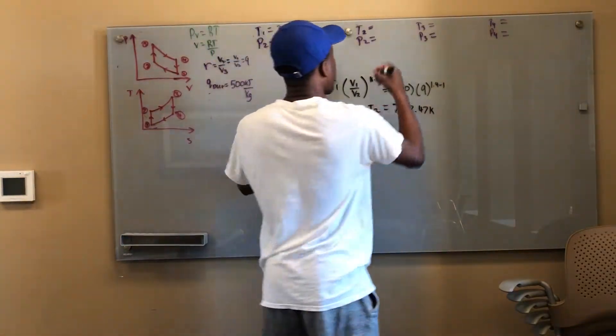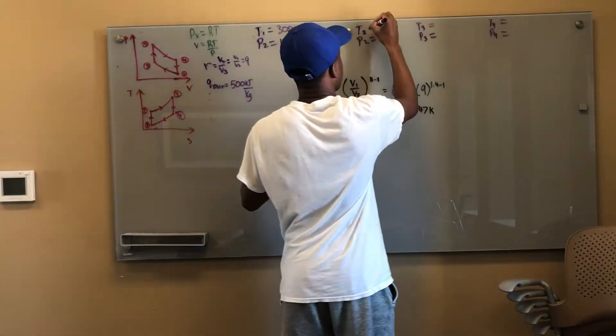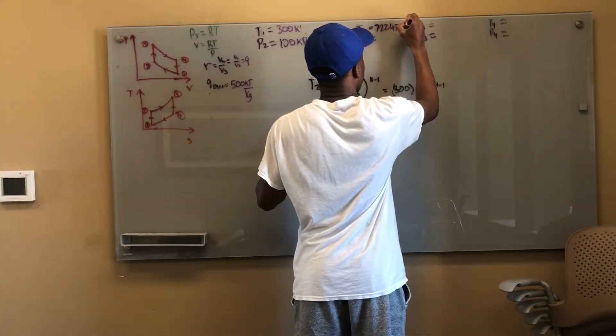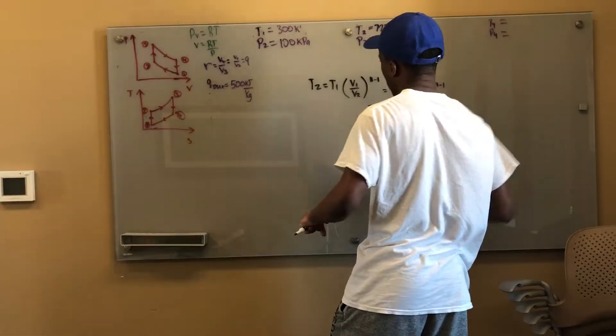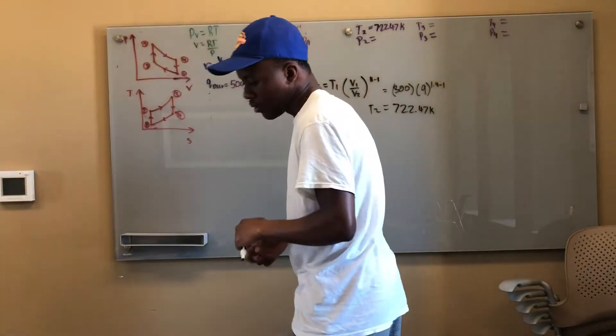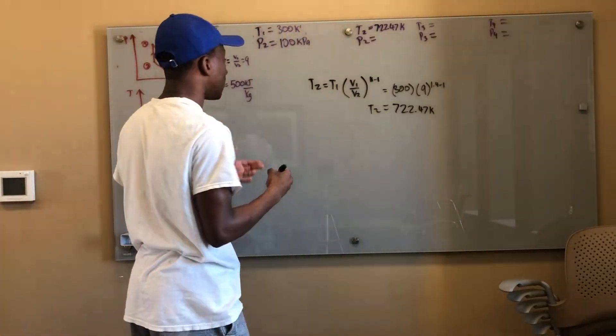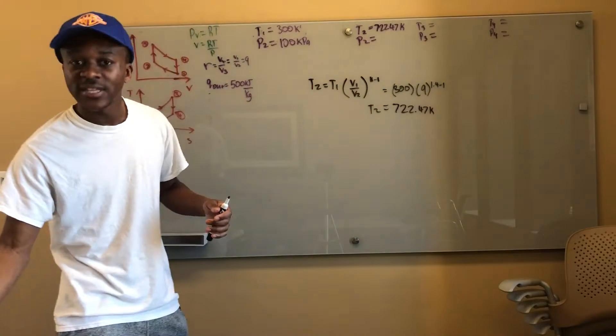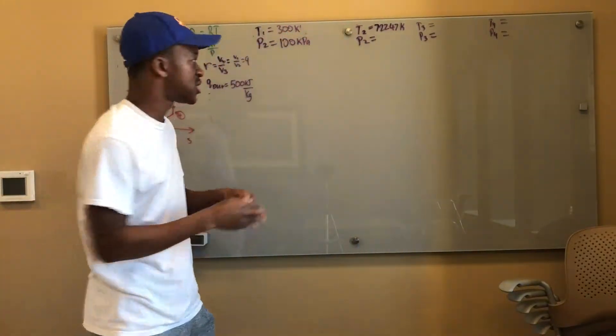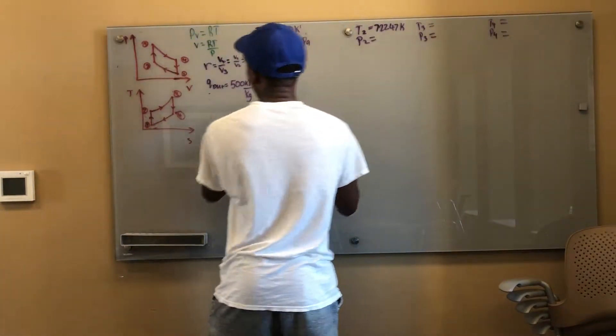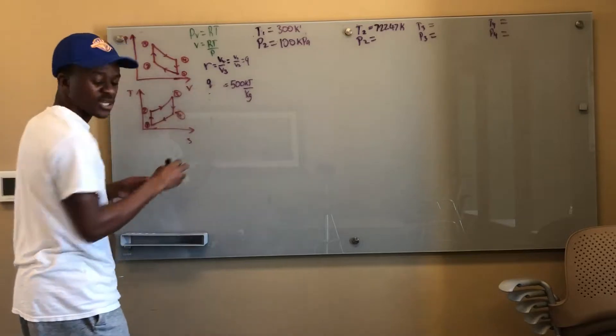So this T2 is 722.47 Kelvin. Okay cool, they want to know T3 and T4 also. Now they've told me that Q_out is equal to 500. So let's say I look at this as a closed system because this whole thing is a closed system. I can say that Q_out, I know is for, I'm sorry this is Q_in, this is actually Q_in.